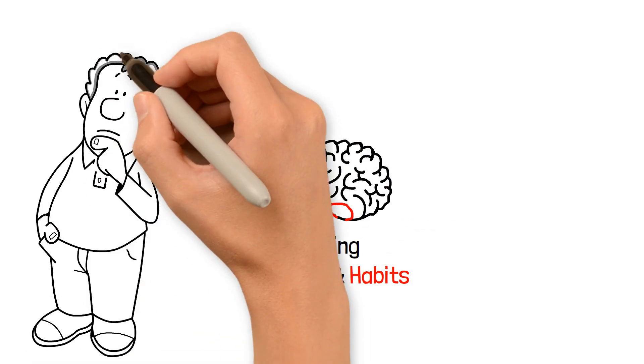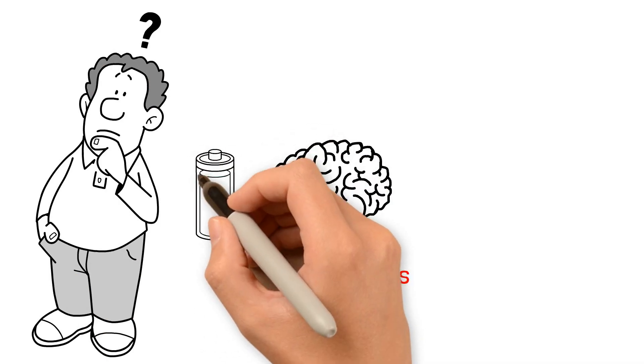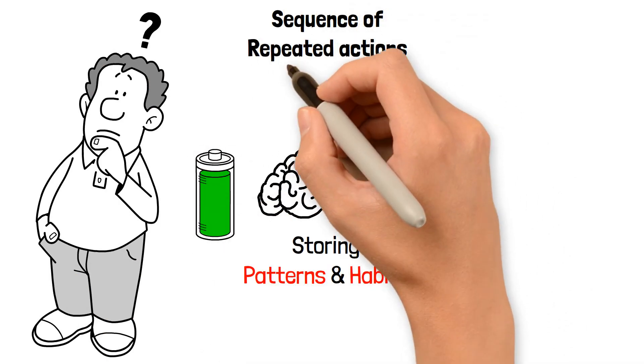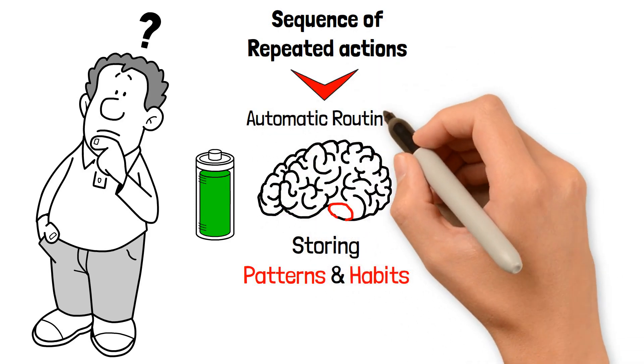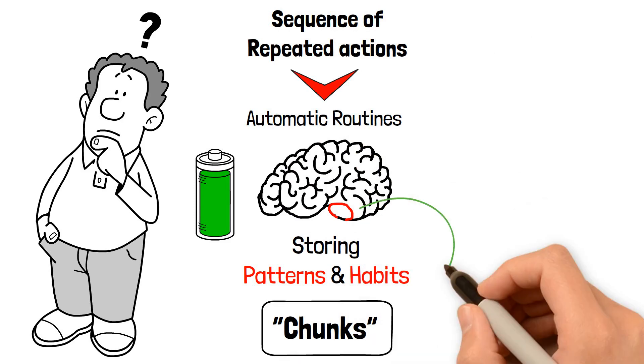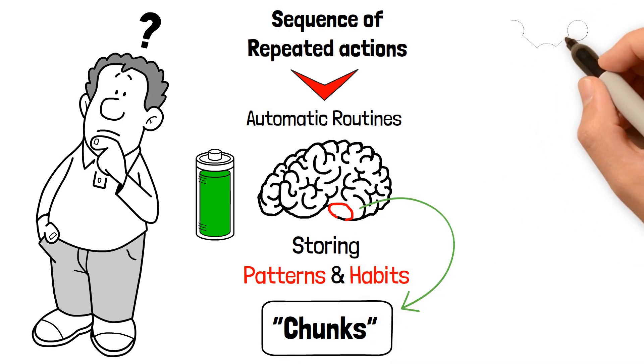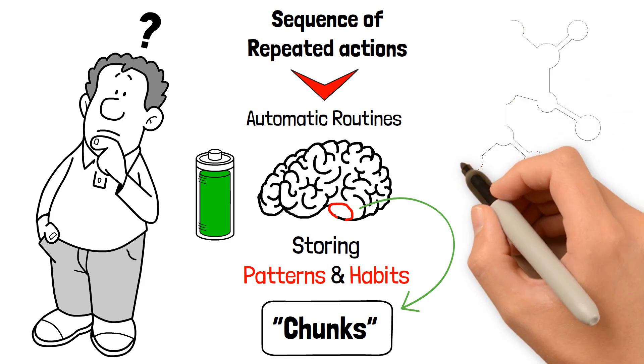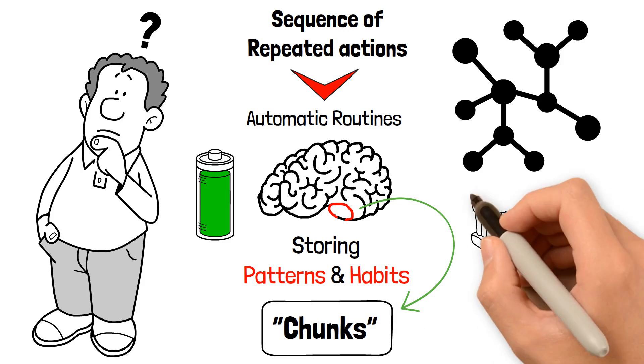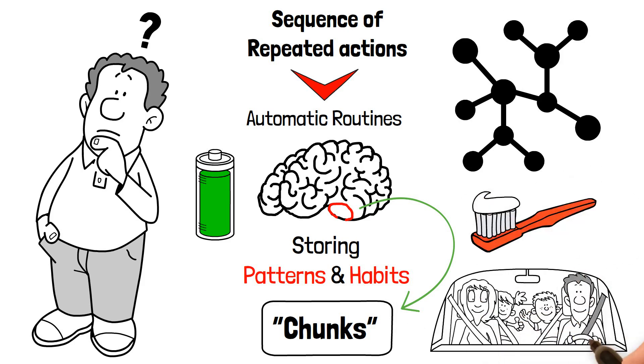But why does our brain do that? The answer is to preserve energy. Our brain converts a sequence of repeated actions into automatic routines, or what is called chunks, then places the basal ganglia in charge and goes back to doing other things. Our basal ganglia stores hundreds, if not thousands, of chunks ranging from simplest, such as putting toothpaste on the toothbrush to operating vehicles.